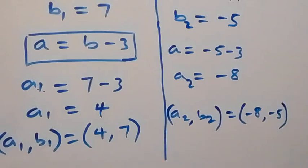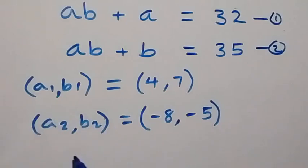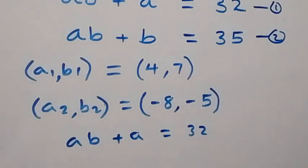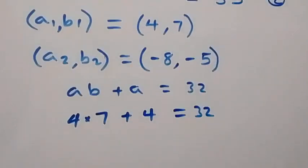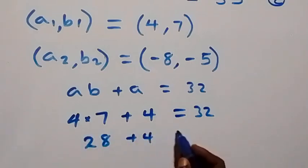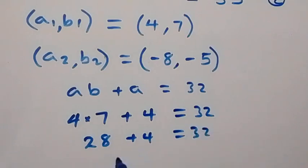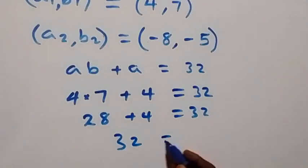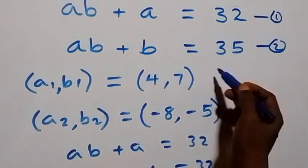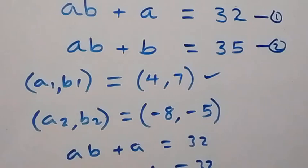We now check whether these solutions satisfy the original equations. Checking the first solution (4, 7) in equation 1, ab plus a equals 32: we have 4 times 7 plus 4, which is 28 plus 4 equals 32. This equals 32, so the first solution satisfies equation 1.